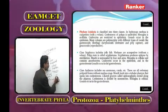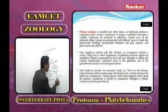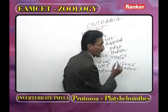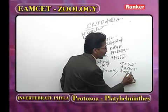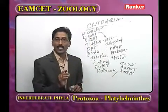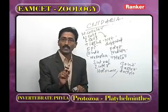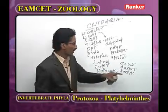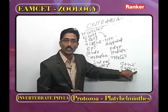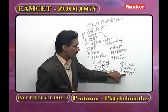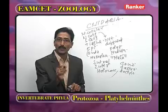In polymorphism, the gonozooid is related to reproduction, the gastrozooid is related to nutrition, and the dactylozooid is related to protection and capture of prey.